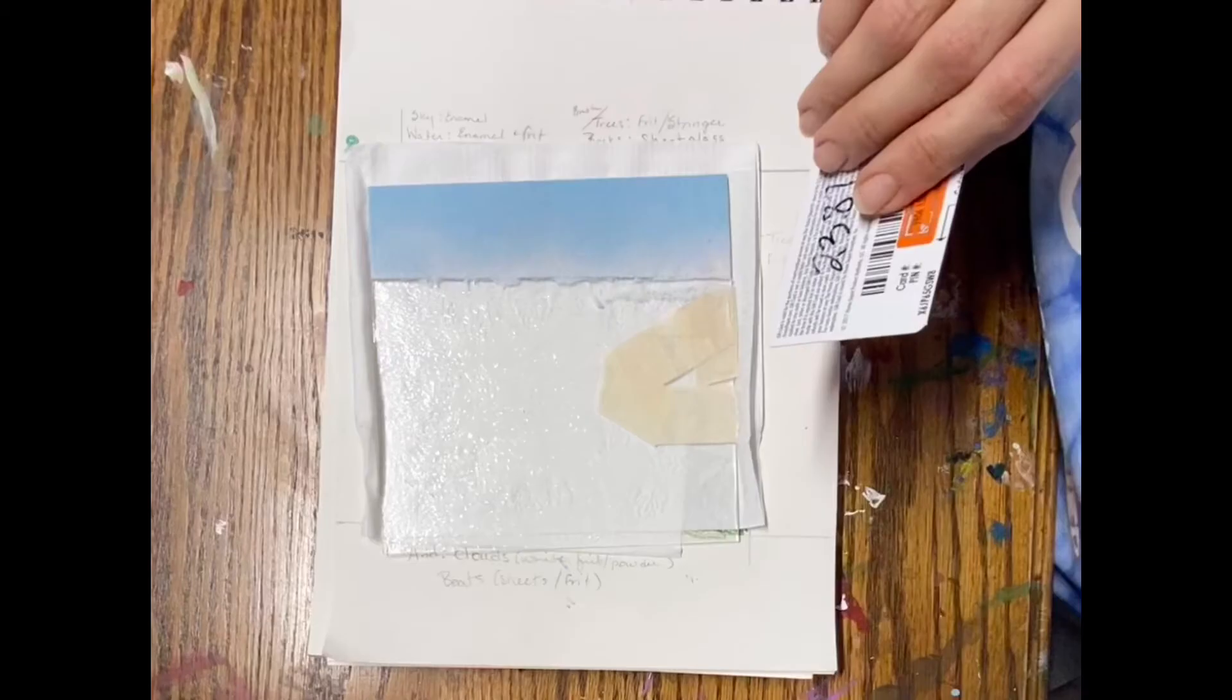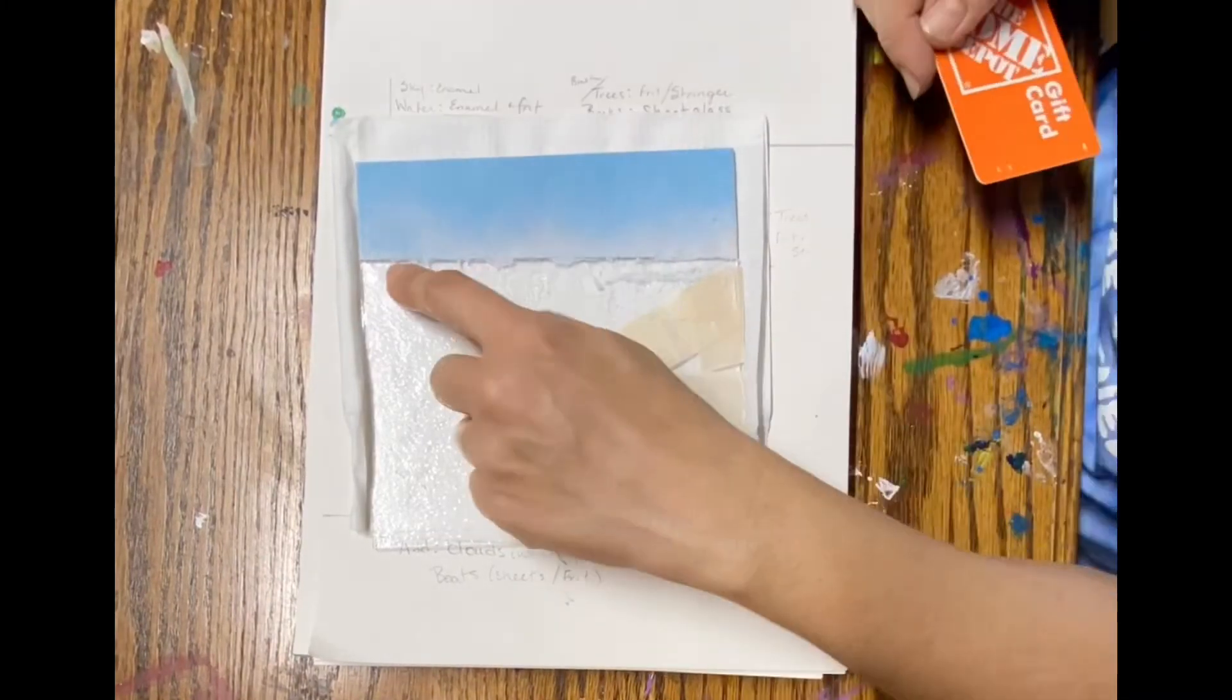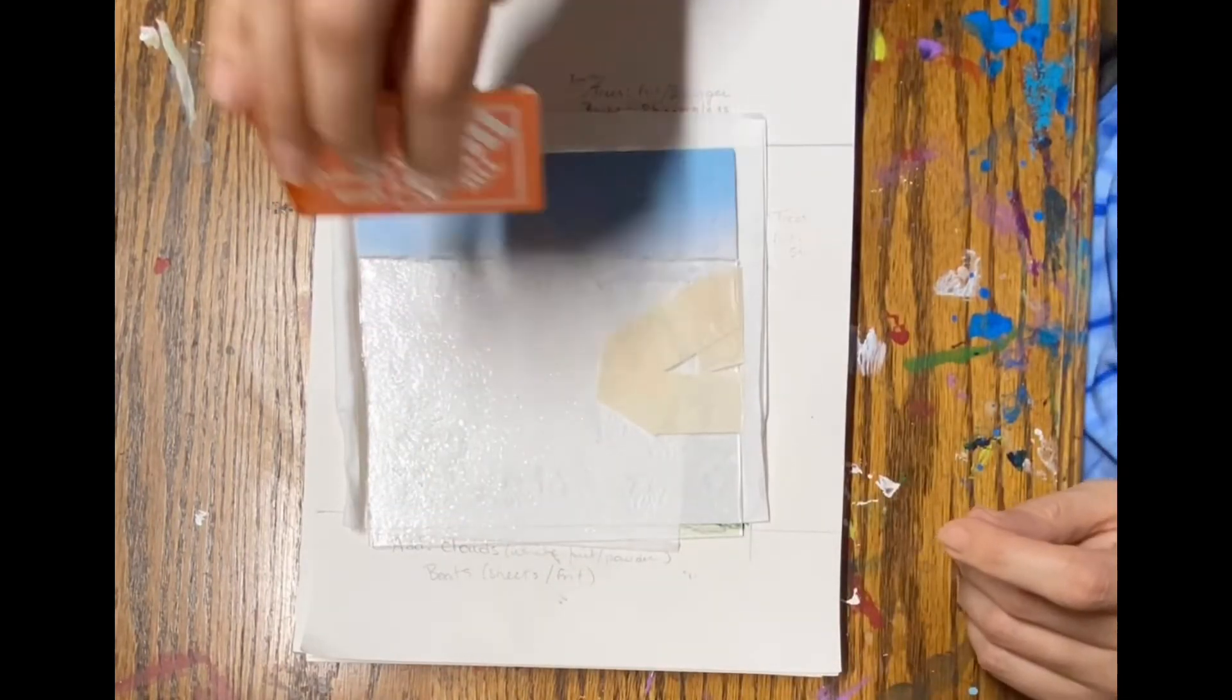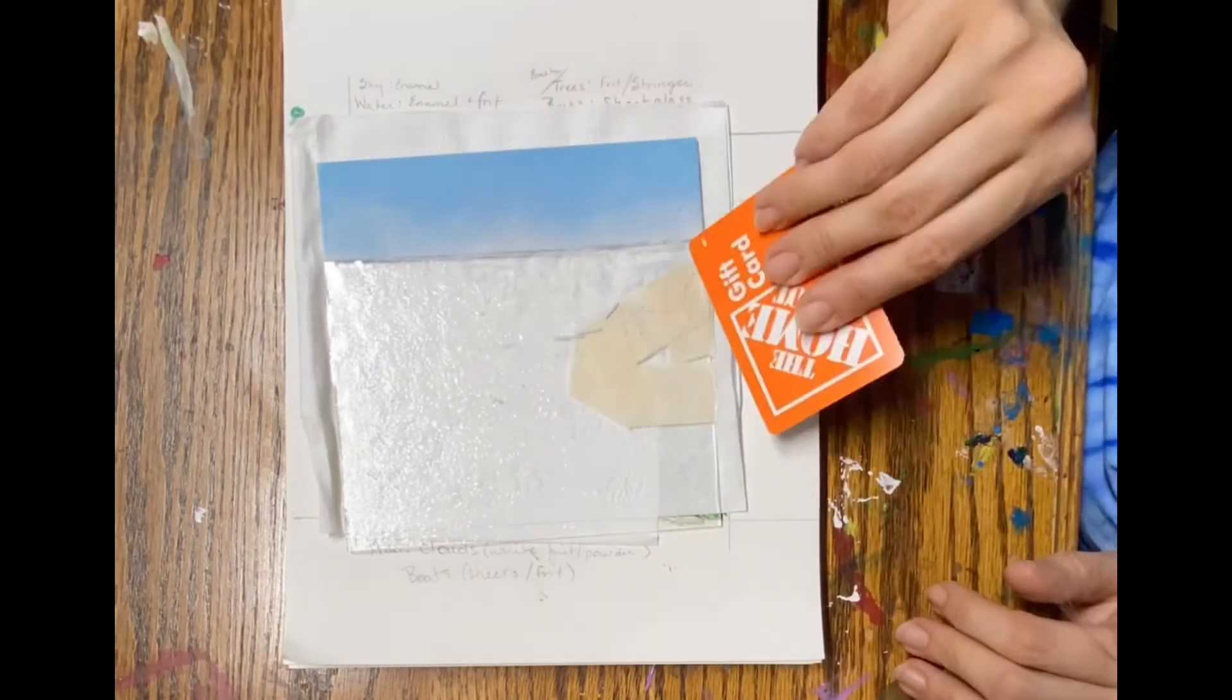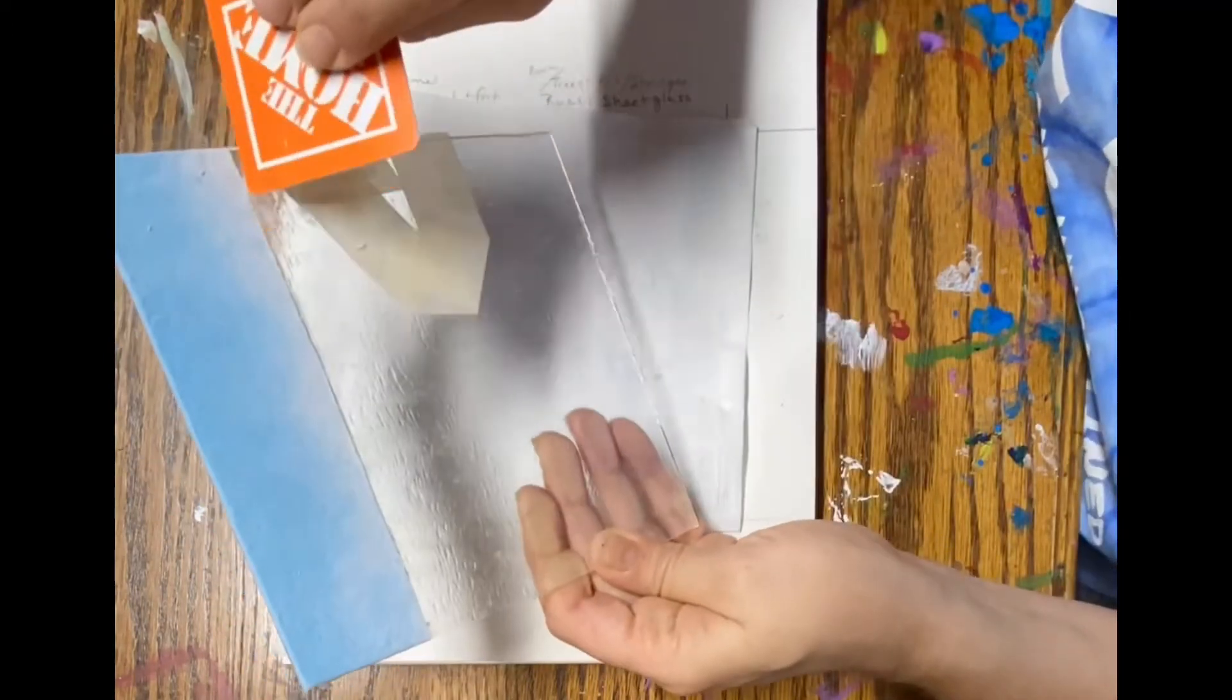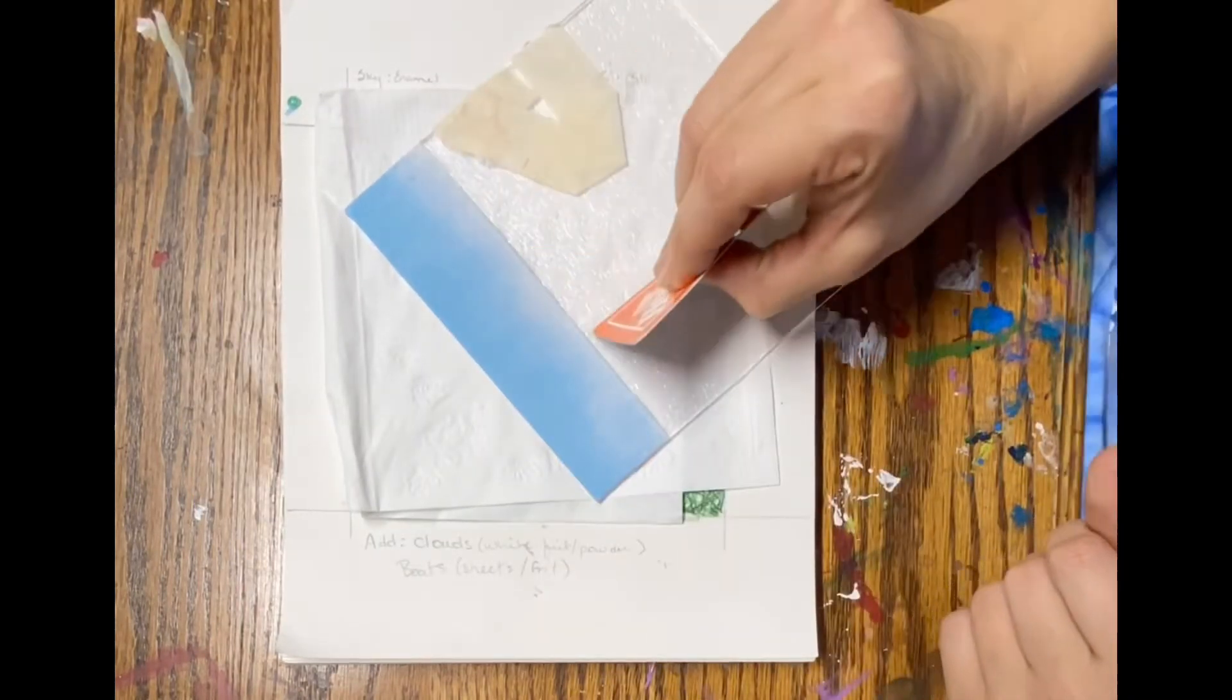So once this dries it's going to be a nice gradient and I can take off the tape. Then I just use like an old gift card to clean up my line, take off any of the excess, but it's pretty well stuck down to the glass at this point so a lot of that enamel isn't moving. I just kind of test a corner with my finger just to see, and be real careful about how you tilt the glass. If the powder isn't totally secure you don't want to make it fall off. So just be careful.